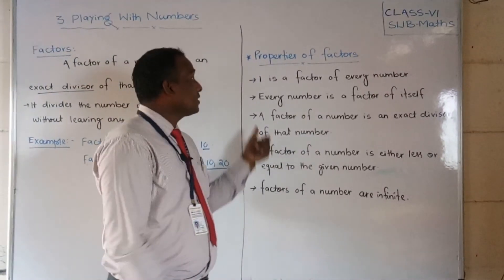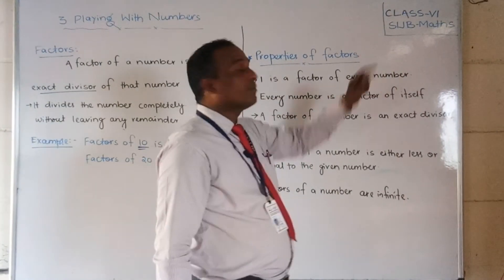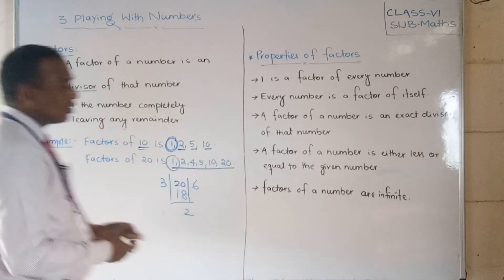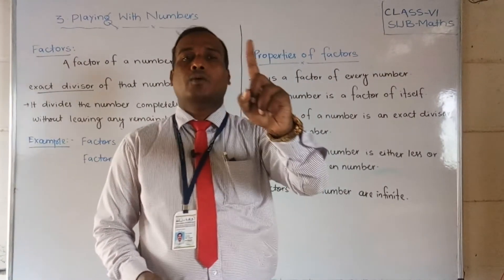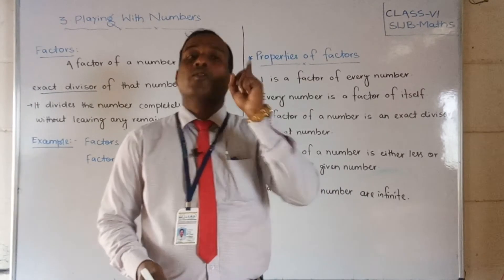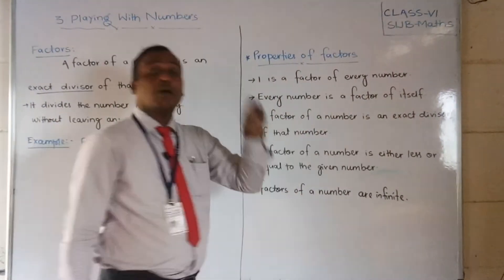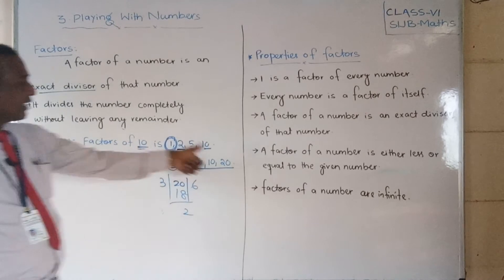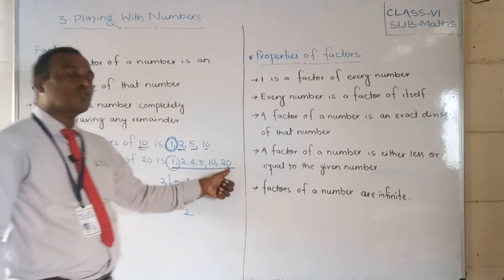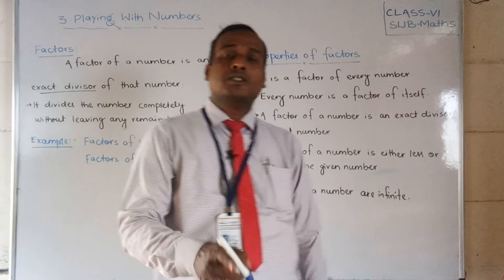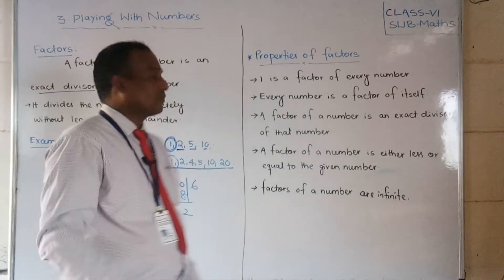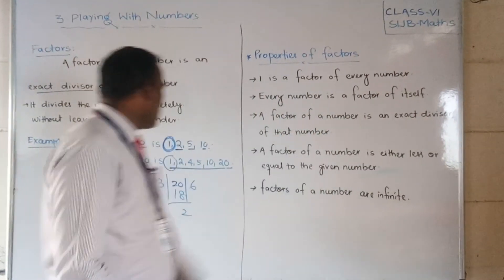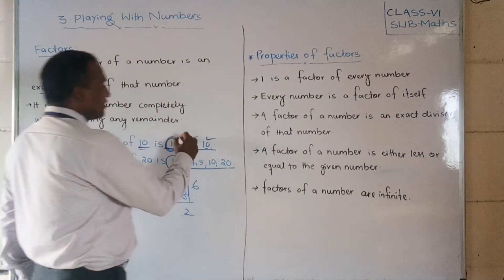Now let us discuss some properties of factors. Property 1: 1 is a factor of every number — as seen in our examples, 1 appears as a factor every time. Property 2: Every number is a factor of itself — for example, 10 is a factor of 10, and 20 is a factor of 20. Property 3: A factor of a number is an exact divisor of that number — dividing by it always gives remainder zero.